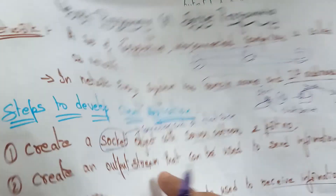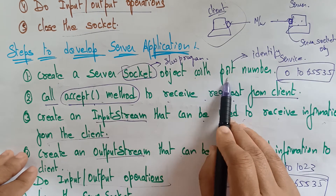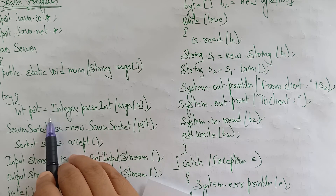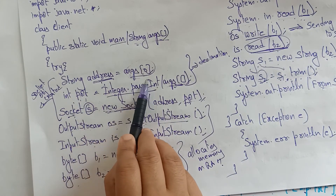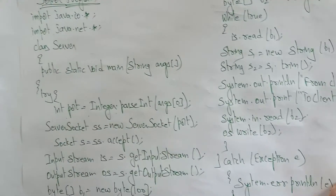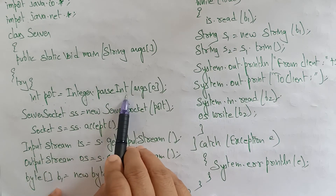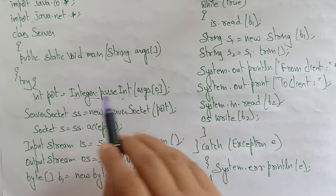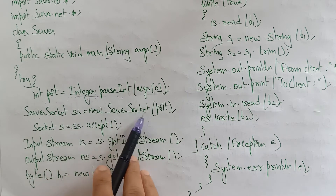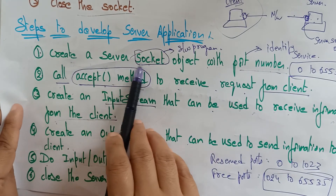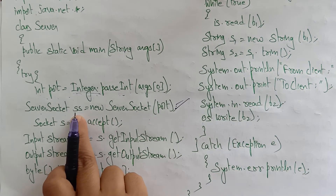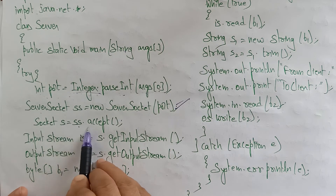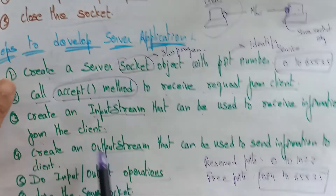For the server program, the steps are: create a ServerSocket object with only the port number — no address needed. So unlike the client where you wrote String address = args[0], for the server only the port declaration is needed: int port = Integer.parseInt(args[0]). Then: ServerSocket ss = new ServerSocket(port). The ServerSocket object is now created.